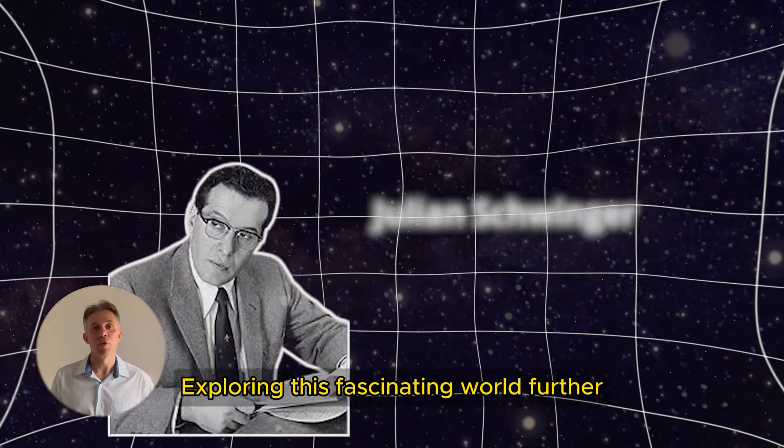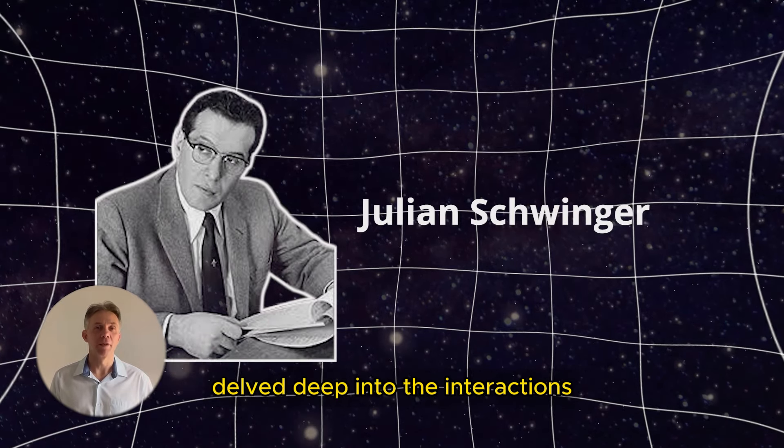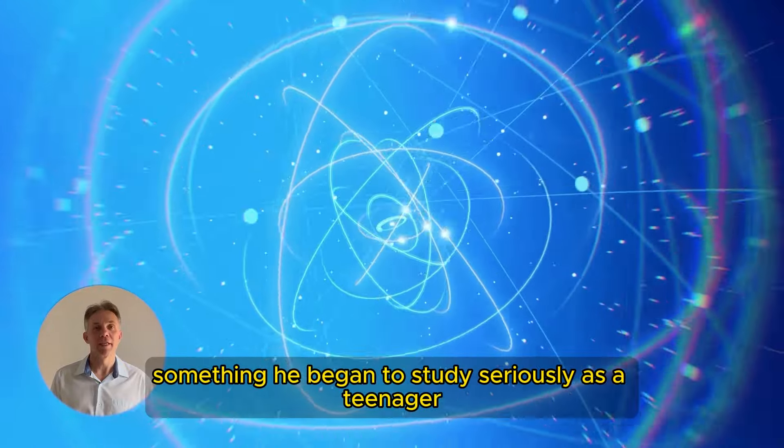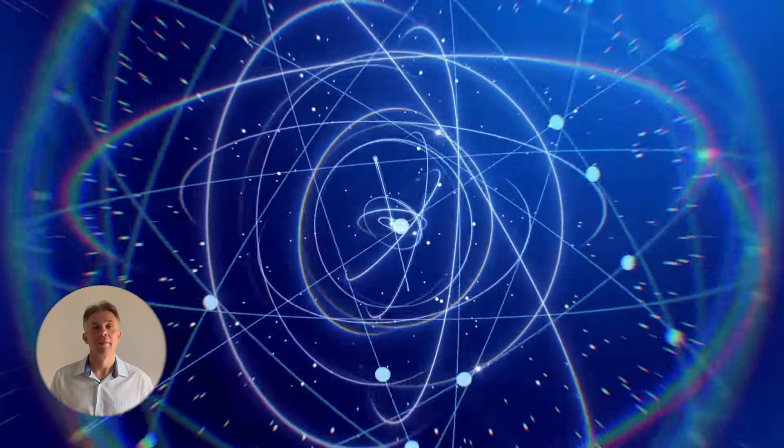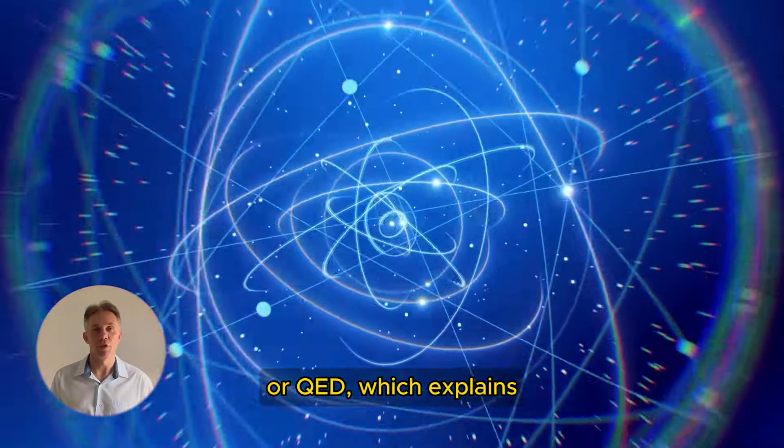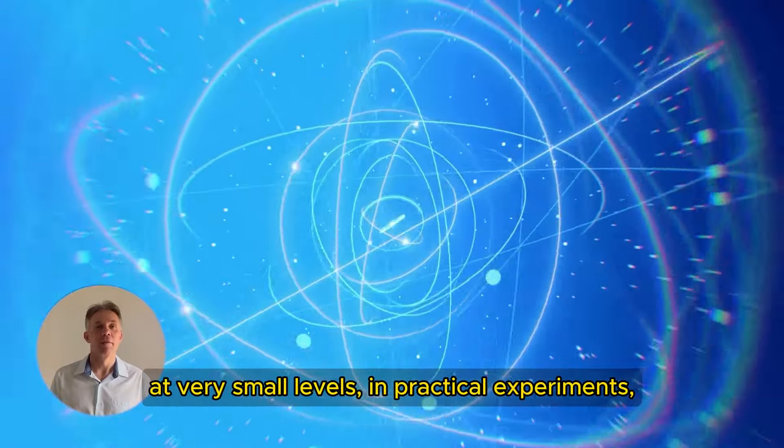Exploring this fascinating world further, Julian Schwinger, another prodigy physicist, delved deep into the interactions between light and matter, something he began to study seriously as a teenager in college. He helped develop what we call quantum electrodynamics, or QED, which explains how light and particles influence each other at very small levels.